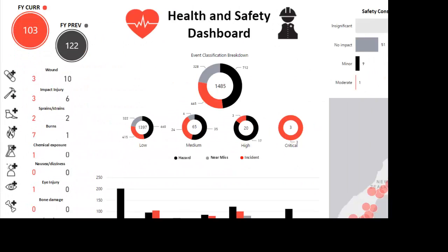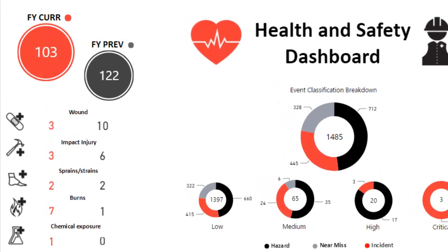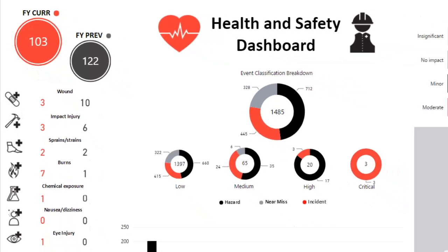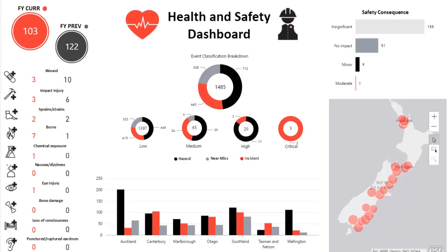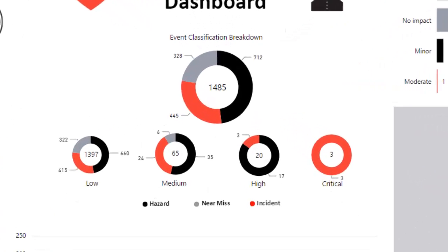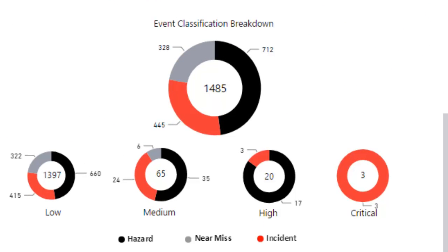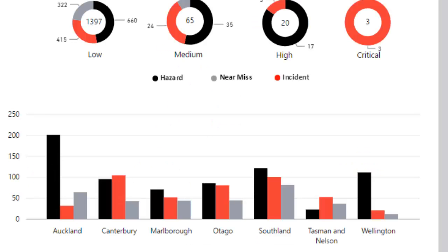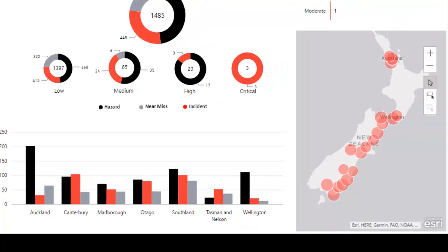Our landing page provides a high-level overview of the health and safety risks at Toolmate. On the left we have a comparison between the current and previous financial years, which is accurate at a year-to-date level. This includes numbers for specific concerns that Toolmate have identified as a priority. In the centre of the page we have a breakdown by event classification, whether it be an incident, a near-miss or a hazard. At the bottom of the page we have a breakdown by region, as well as a map which highlights the stores and the number of events that have occurred at those stores.